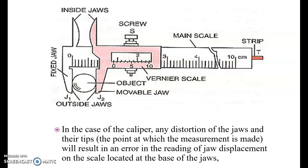Now consider the first example: the vernier caliper, and how it does not obey Abbe's principle. When measuring the diameter of a shaft using the jaws of a vernier caliper, this is the line of measurement. However, the scale of the instrument lies at a different position — the scale line and the measurement line do not coincide; there is an offset between them. This is why the instrument does not obey Abbe's principle.